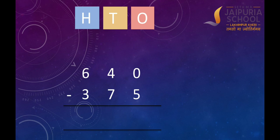Let's borrow 1 ten from 4 tens. Now 3 tens are left. As we know that 1 ten is equal to 10 ones, so now we have 10 ones.